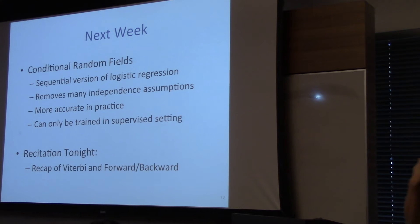So next week, I'll be talking about conditional random fields, which is a sequential version of logistic regression. Just like our hidden Markov models is a sequential version of naive Bayes, conditional random fields is a sequential version of logistic regression. It removes many of the independence assumptions, much more accurate in practice. Of course, it can only be trained in a supervised setting, because it requires both X and Y. And it is still state-of-the-art in many, many problems.